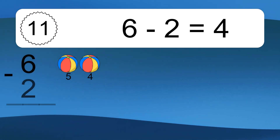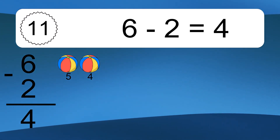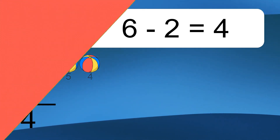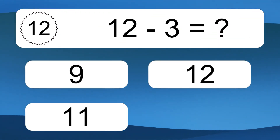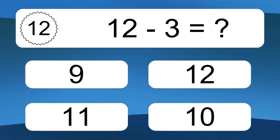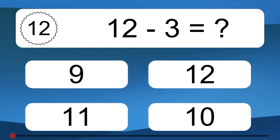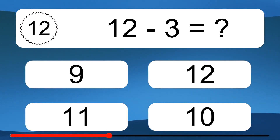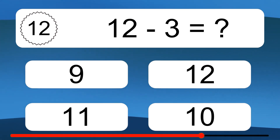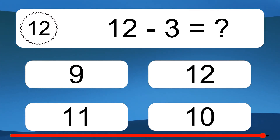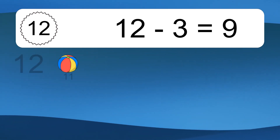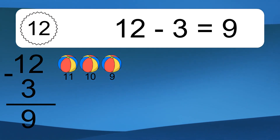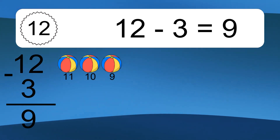6 minus 2 equals 4. Let's count it: 5, 4. 12 minus 3 equals what? 12 minus 3 equals 9. Let's count it: 11, 10, 9.